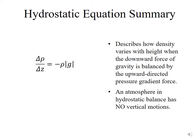To summarize the Hydrostatic Equation, we have delta rho over delta z equals minus density times the absolute value of gravity. This equation describes how density varies with height when the downward force of gravity is balanced by the upward directed pressure gradient force.